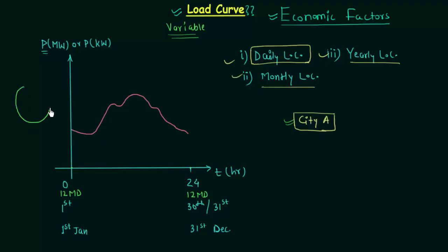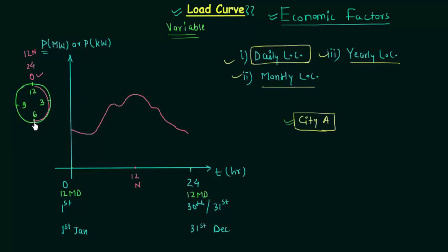If I draw a clock — this is 12, this is 6, this is 3, and this is 9. Now 0 hour is 12 midnight, and 24 hour is also 12 midnight. In between we have 12 noon. When you start at 12 midnight you are at 0 hours; moving around you reach 6, then 9, then 12 — which is 12 noon after 12 hours. Continuing around again you reach 12, which is now 24 hours — midnight again.